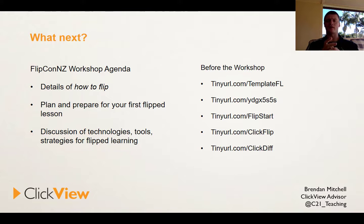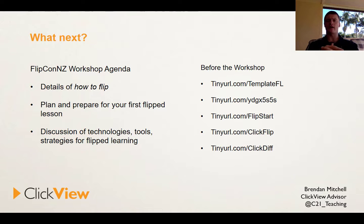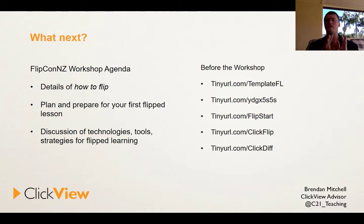On the right-hand side there are some links. The very first one — tinyurl.com/templateFL — I'd like you to print that out and bring a copy with you. It's a template that will help you start thinking about the process of flipping your classroom and what you want to achieve in the individual and group learning spaces. The second link — tinyurl forward slash ydgx5s5s — is a link to a white paper on flipped learning that ClickView published last year.